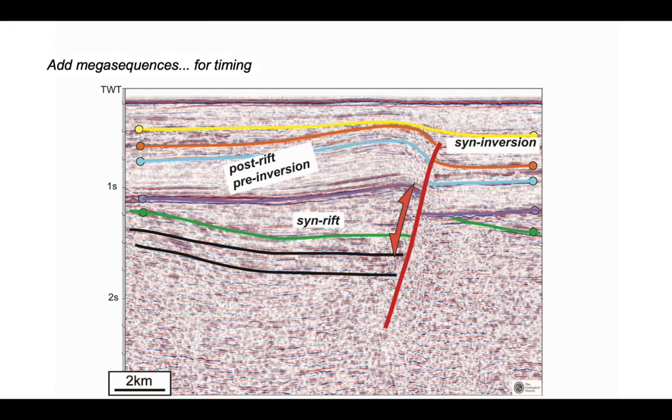Starting in the shallow, you can see that there's a thickness change across the fold represented by the yellow and orange horizons, where that interval thins across the anticline. So we've got a package of rocks there that were deposited during the inversion, the syn-inversion megasequence.